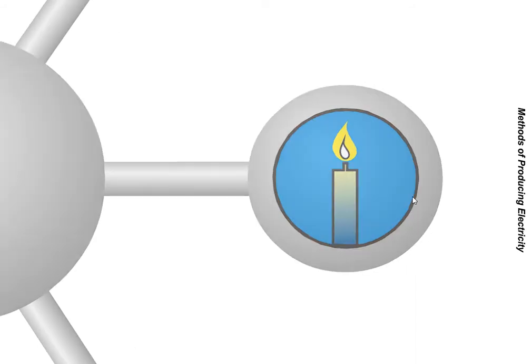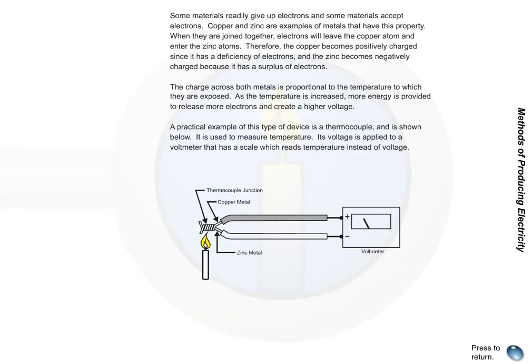Heat. Some materials readily give up electrons and some materials accept electrons. Copper and zinc are examples of metals that have this property. When they are joined together, electrons will leave the copper atom and enter the zinc atoms. Therefore, the copper becomes positively charged since it has a deficiency of electrons, and the zinc becomes negatively charged because it has a surplus of electrons.